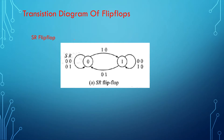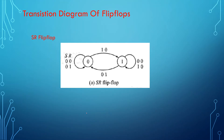The very first flip-flop we are going to study is the SR flip-flop, also called the Set-Reset flip-flop. We already know the truth table: if S=0, R=0, the previous state is retained; if S=0, R=1, the data becomes 0 (reset); if S=1, R=0, the data becomes 1 (set); and if S=1, R=1, it enters an illegal state. This same truth table has to be transferred into a transition diagram. The two states of the flip-flop are 0 and 1.